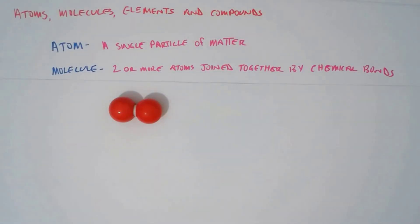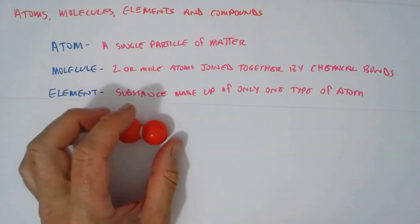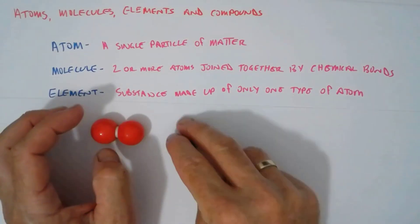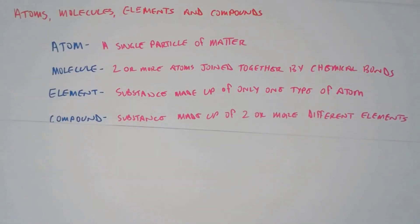An element is when all of the atoms in a substance are of the same type. So an element is where substances are made up of only one type of atom.